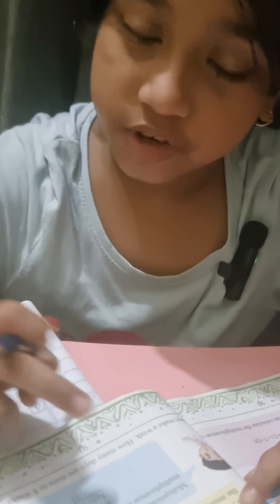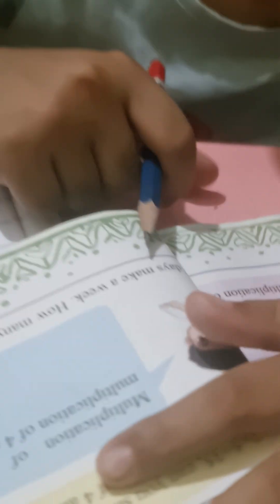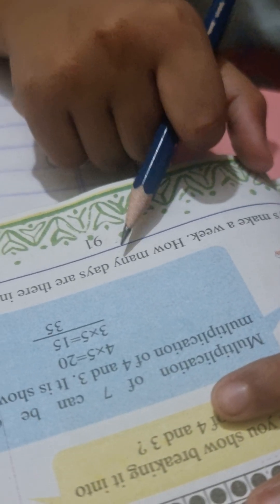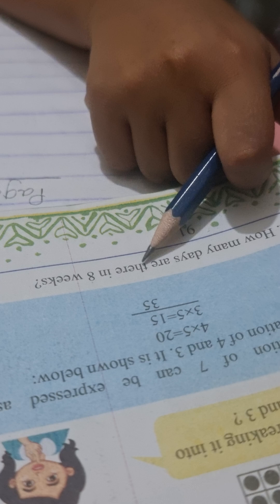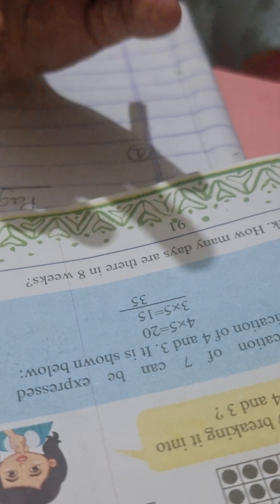Oh page number 91, number one, problem. Seven days make a week, how many days are there in eight weeks?